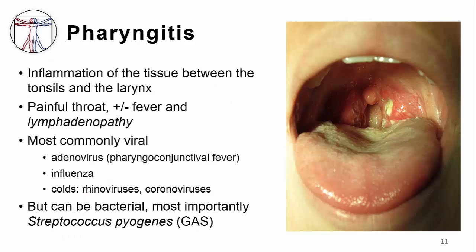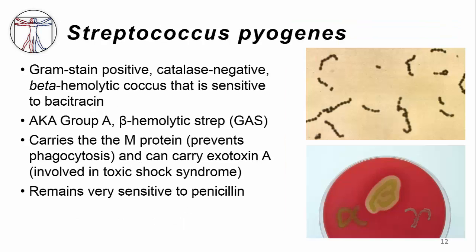Pharyngitis is a prototypical case of direct infection. Pharyngitis is simply inflammation of the tissues between the tonsils and the larynx. It presents with a painful throat, sometimes a fever, and lymphadenopathy, or swelling and tenderness of the anterior chain lymph nodes in the neck. Most commonly it's a viral infection, but it can often be caused by a bacterial infection. You've probably heard of strep throat, or Streptococcus pyogenes pharyngitis. Strep pyogenes is a Gram-positive, catalase-negative, beta-hemolytic streptococcus that is sensitive to bacitracin.